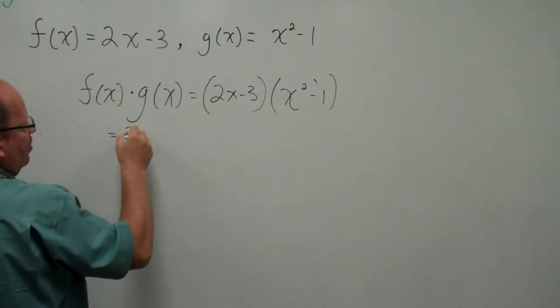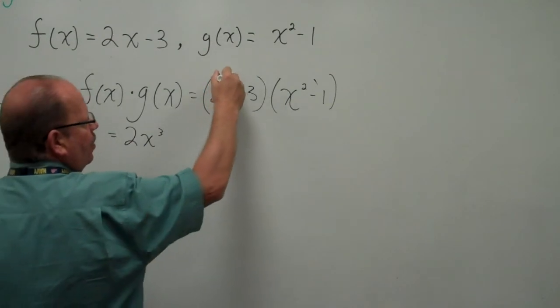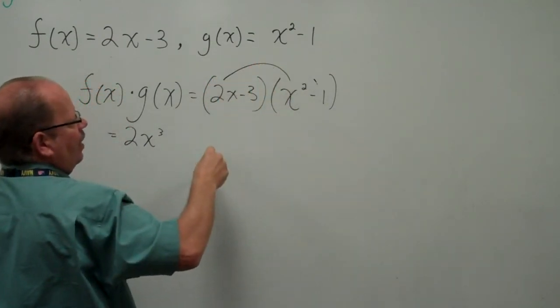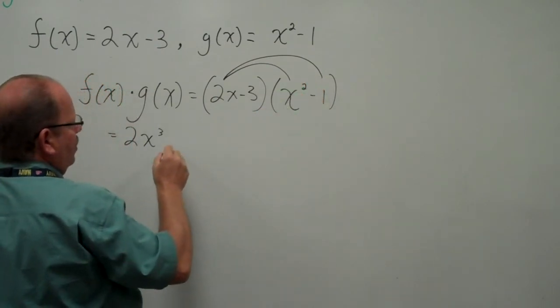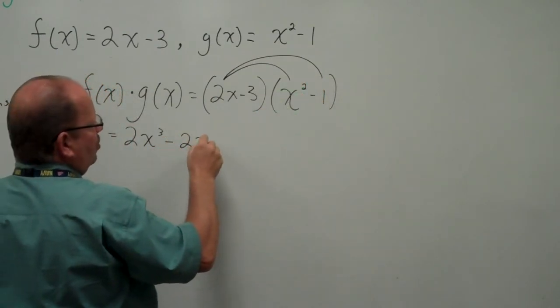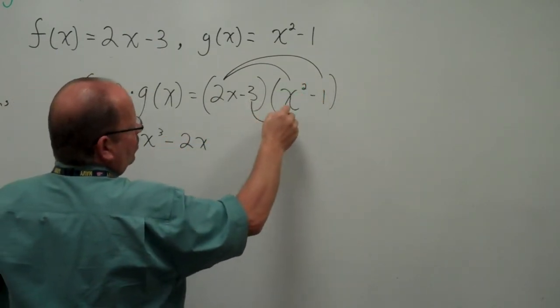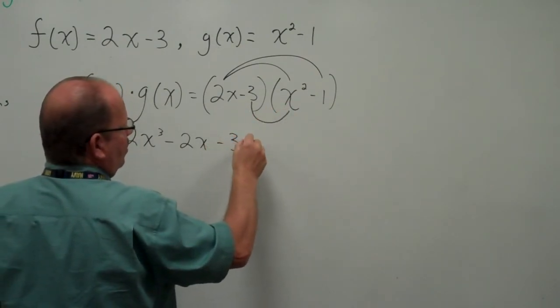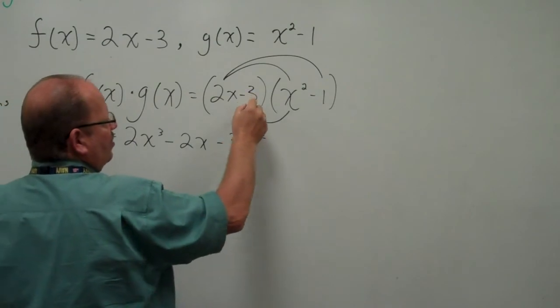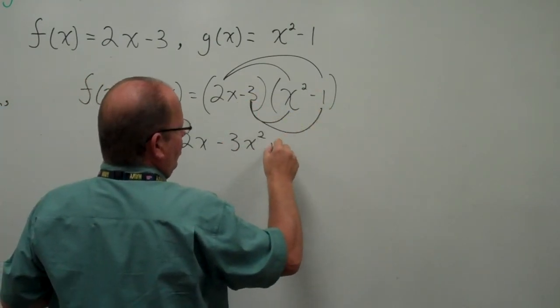2x times x² is 2x³. Outers, 2x times -1, -2x. Inners, -3 times x², -3x². And lasts, -3 times -1, +3.